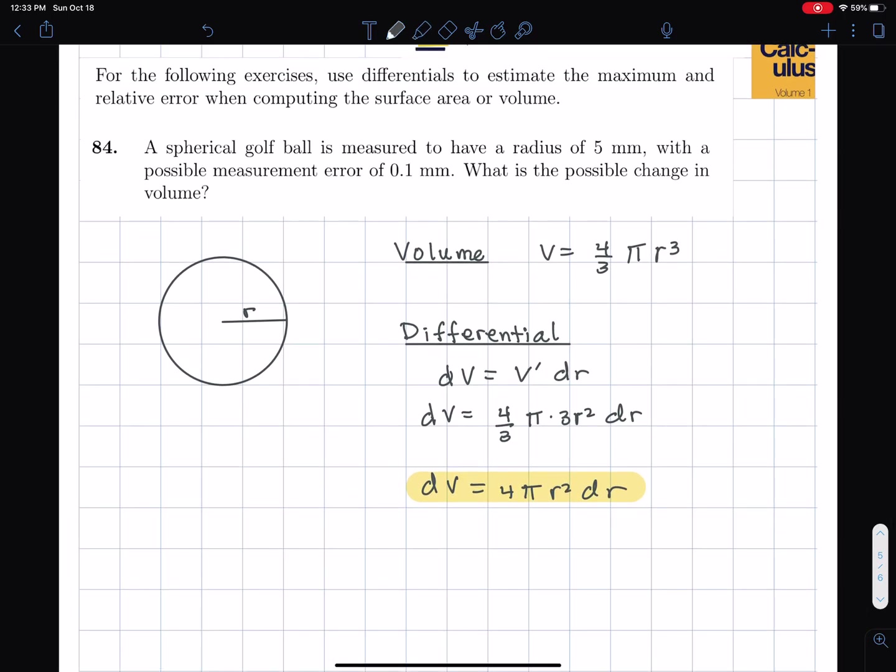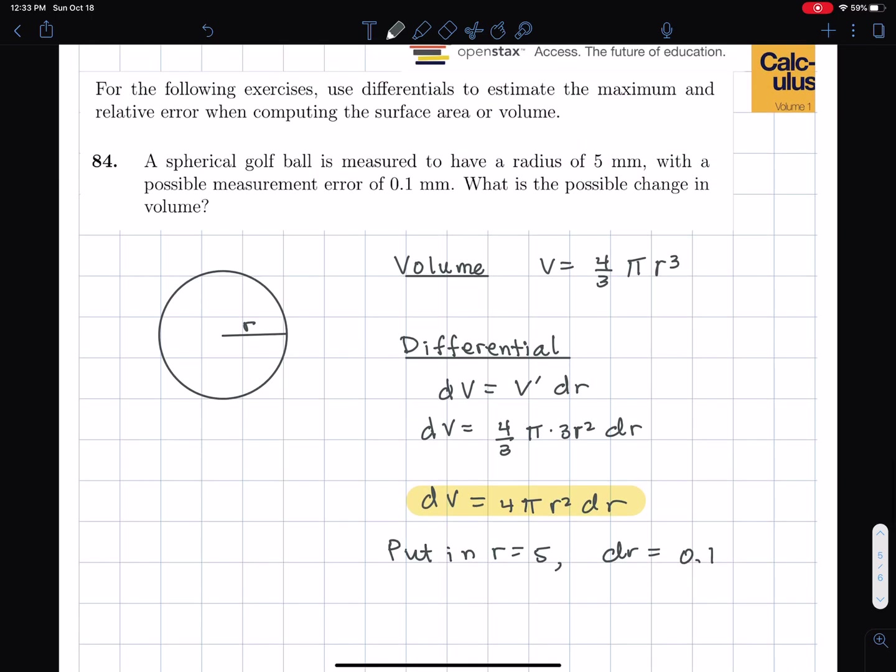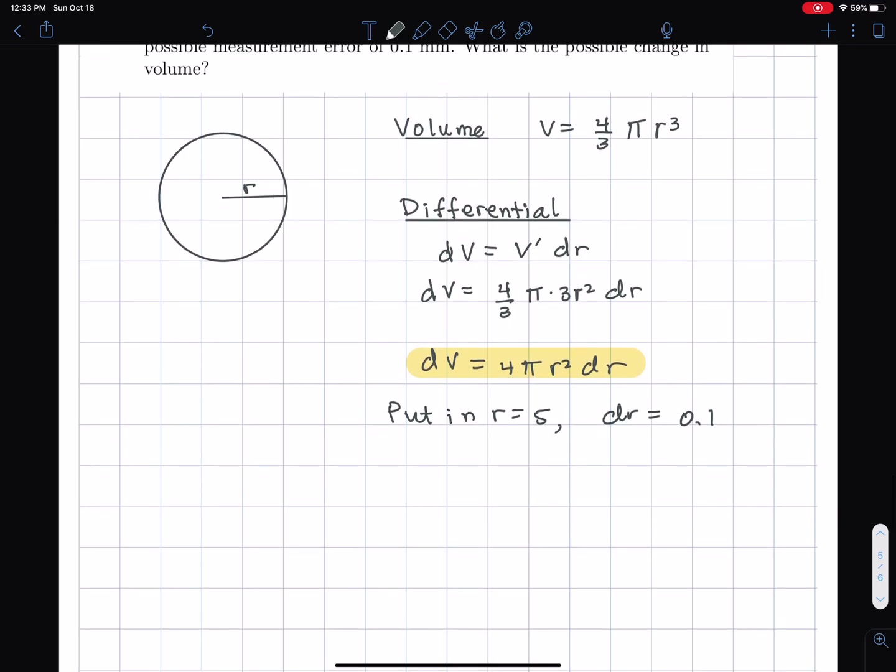And then what we do is we're going to put in r is 5, and then our small change in r is 0.1. So the question is, if you're making this golf ball and the radius is 5, but you think there's a measurement error of 0.1, then how much is your error in volume going to be, your measurement error? What does a small change in r do to affect the volume? What change does that make in volume?